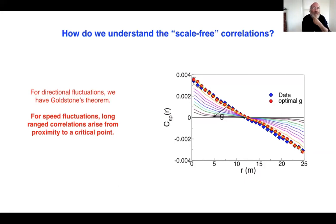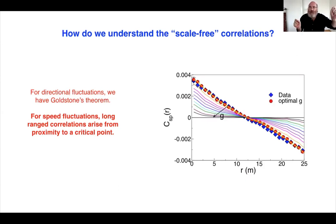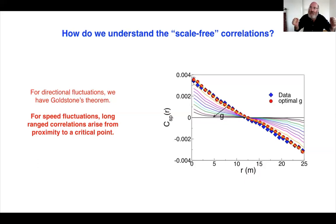Shouldn't the correlations decay to zero at far distances? First, the way the correlation function is defined, it can extend to large distances - that's an experimental question. The fact that you see non-zero correlations at very long distances is surprising. And you'll notice that we never introduced any long-range interactions into the theory - the only thing we did was match the short-range correlations. This is an example where long-range correlations emerge as a consequence of short-range interactions. That's what's special about the system.